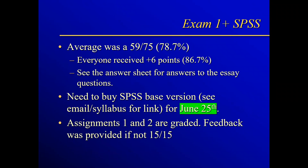I have exam number one graded, and you should be able to see your grade — if not, they'll be available after class. The average was actually pretty good: it was a 59 out of 75, basically 79%. A 79% might sound low, but that's higher than typical semesters. However, there were a couple of questions that a majority of people got wrong, and I looked back at them and I don't like those questions. So everyone received plus six points, bringing the average grade up to an 87. Good job on that.